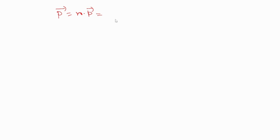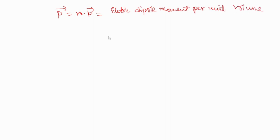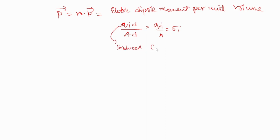This will also be called electric dipole moment per unit volume of the dielectric. In mathematical terms, electric dipole moment will be qi times d, and volume will be A times d, so this simplifies to qi upon A, which you can also write as sigma_i. Here qi is your induced charge on the surface of the dielectric, and sigma_i is the induced surface charge density.